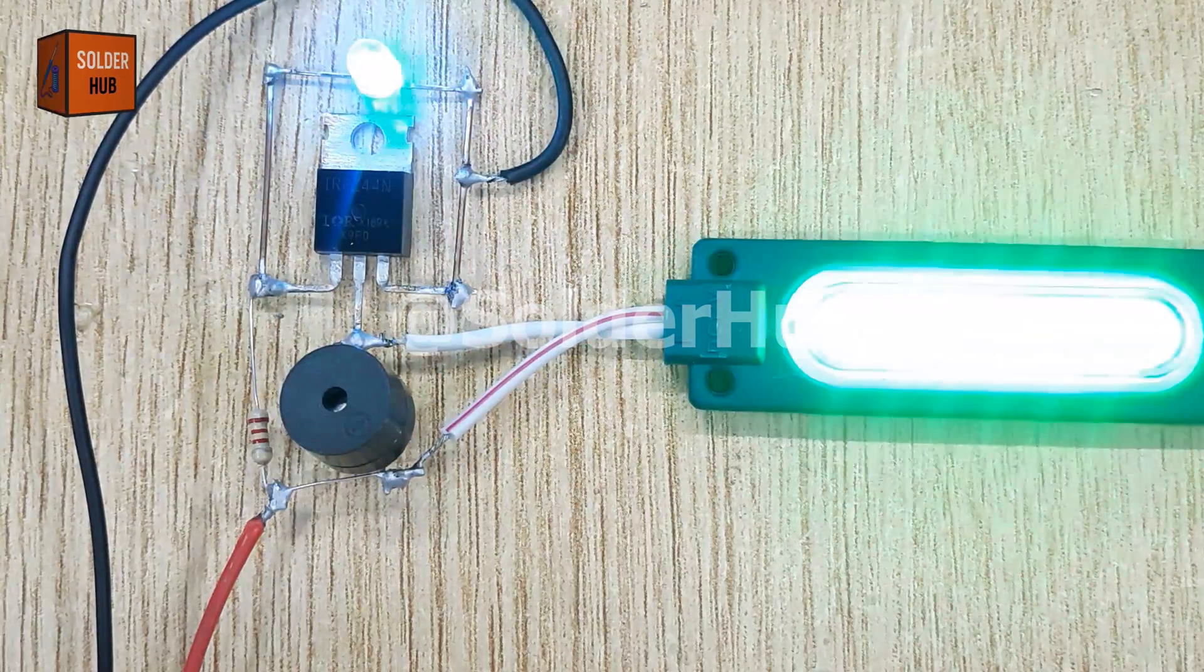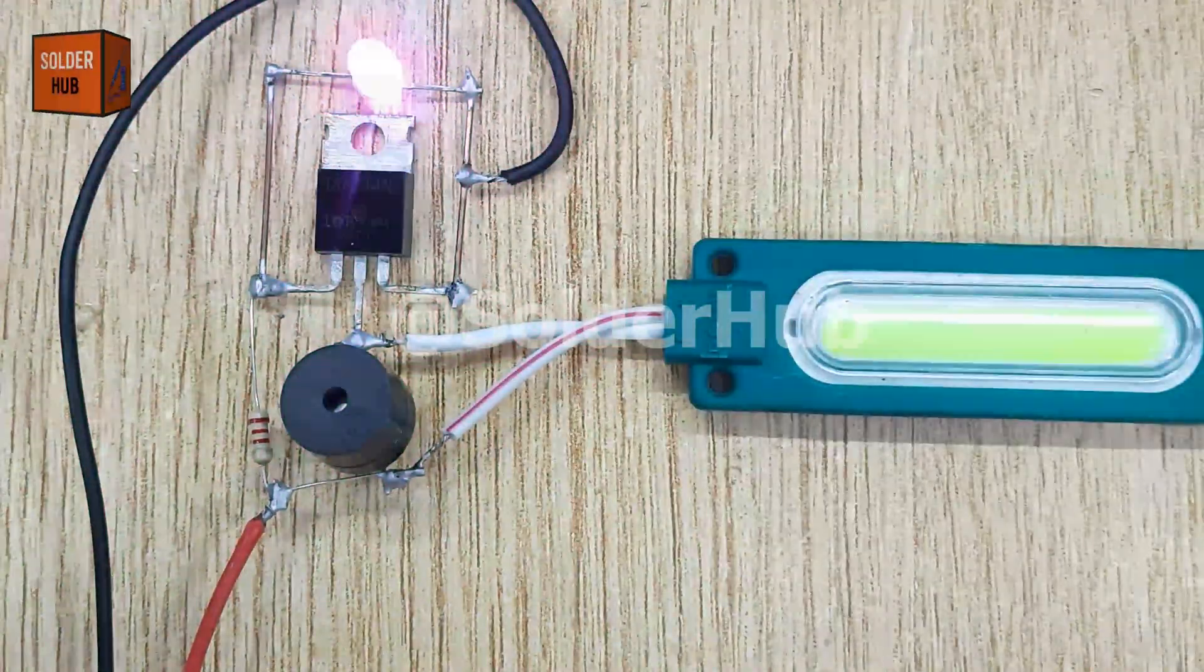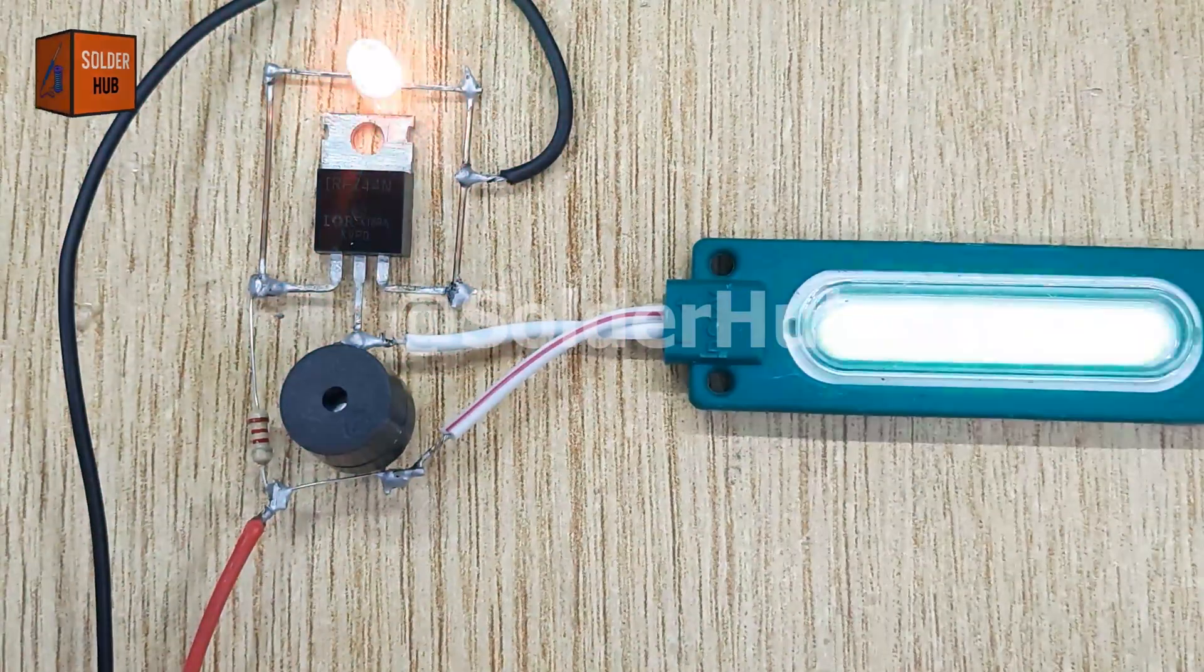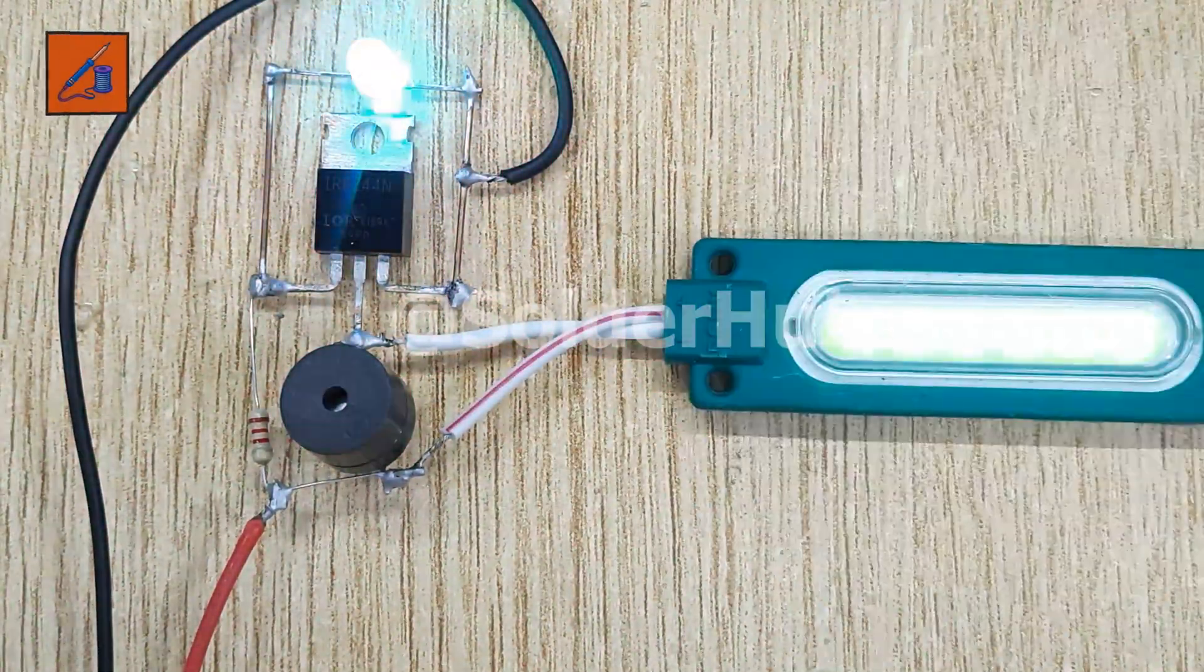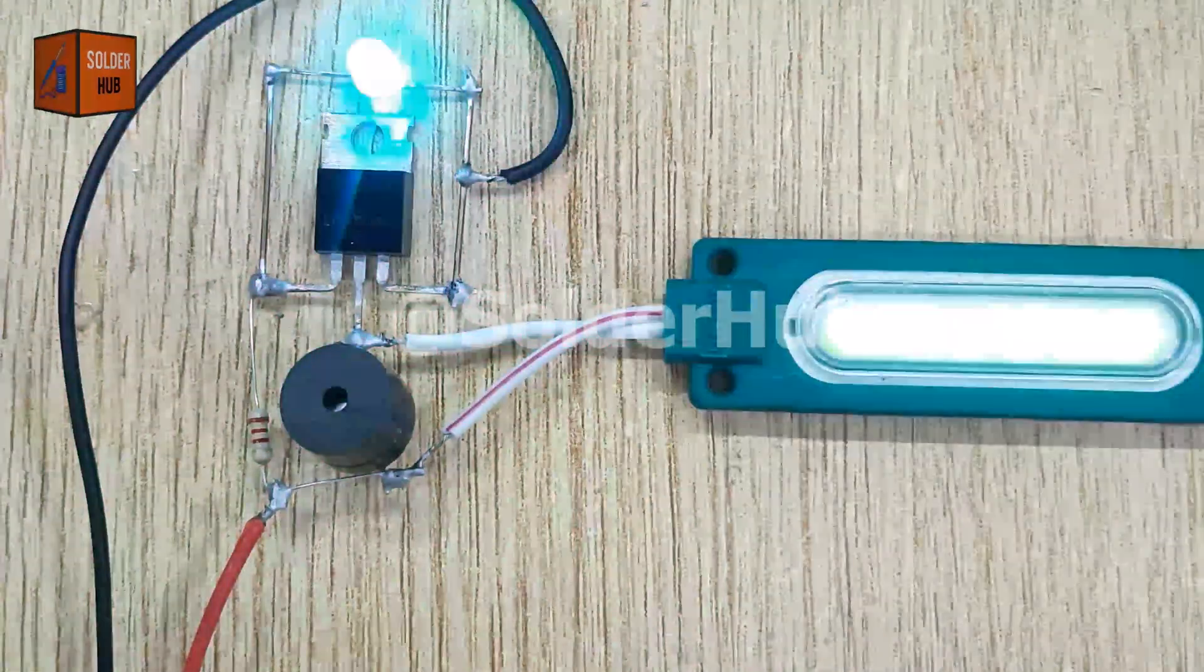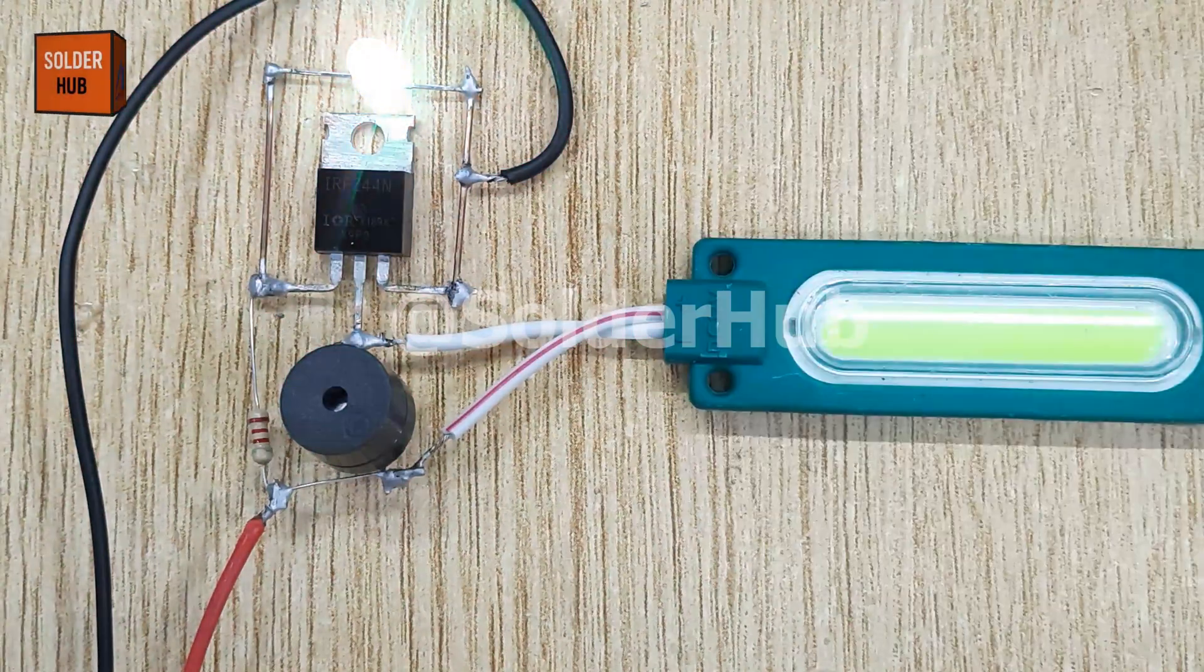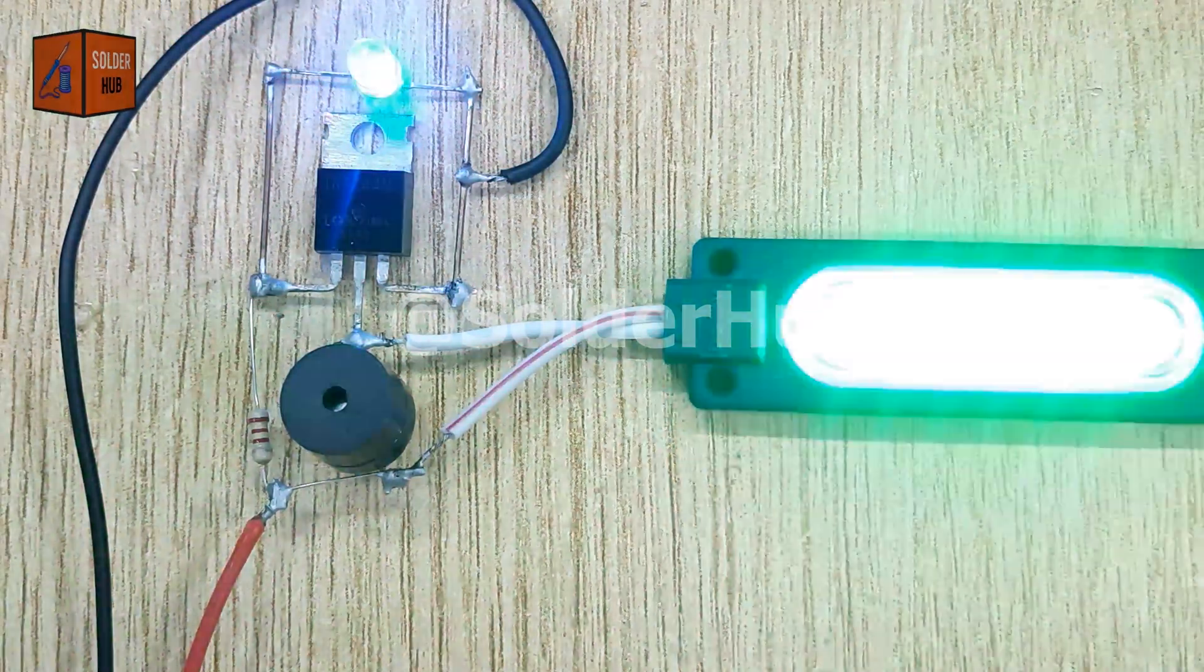You can use it on bicycles or motorbikes for safety lights and fun sirens, as a warning indicator on small DIY vehicles or toys, in DIY alarm systems where the buzzer acts as a siren and the LED as a strobe, for learning electronics as it demonstrates how a MOSFET can control both lights and sound together.